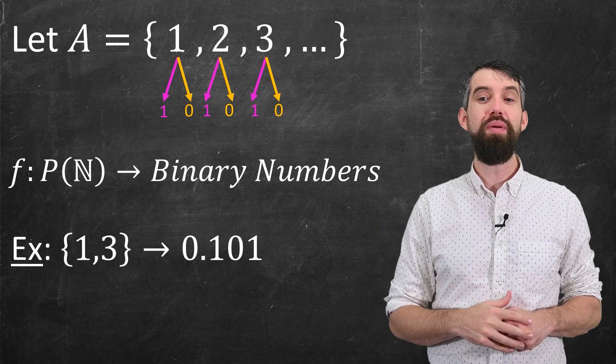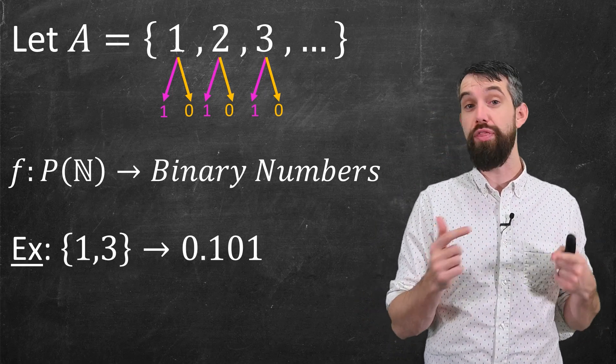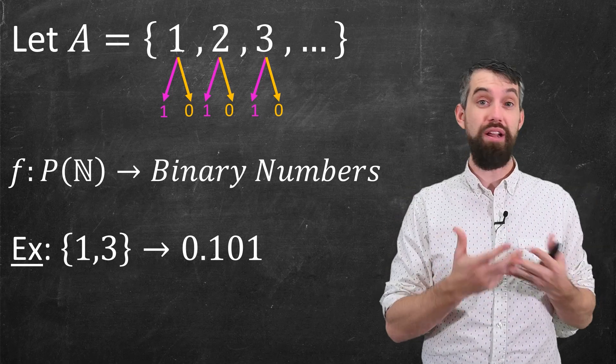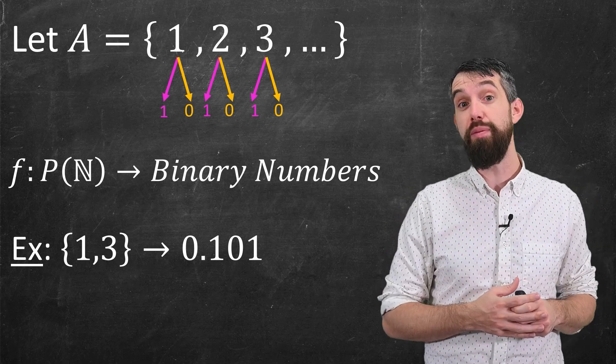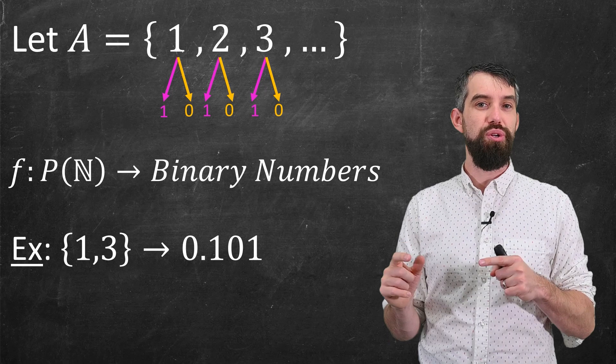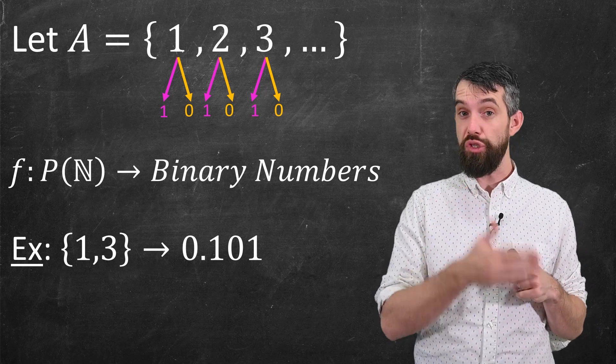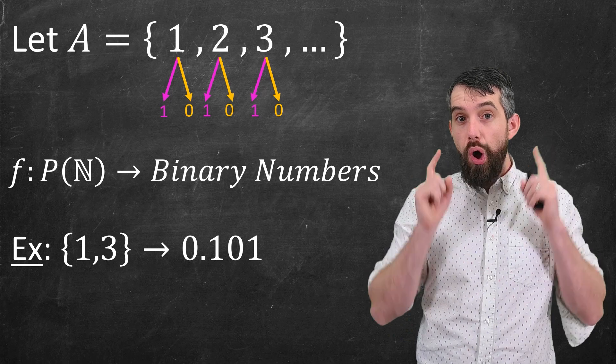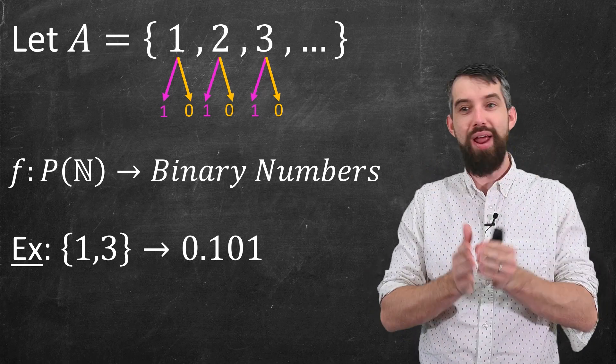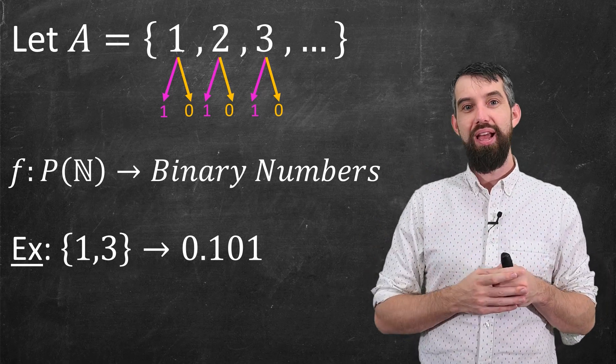Here's how this function works. Let me begin with an example like the subset {1, 3}. {1, 3} is a subset of the natural numbers, so it's inside of the power set of the natural numbers. What I'm going to do is I'm going to send this to a binary number. Binary numbers only have zeros and ones. And I'm going to make it always start with zero dot. And I'm only going to change the parts after that.